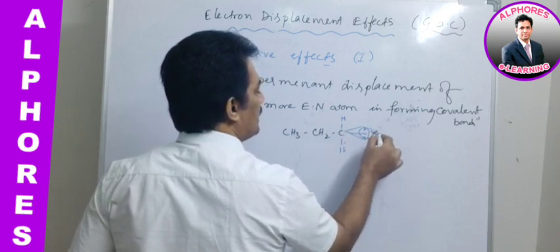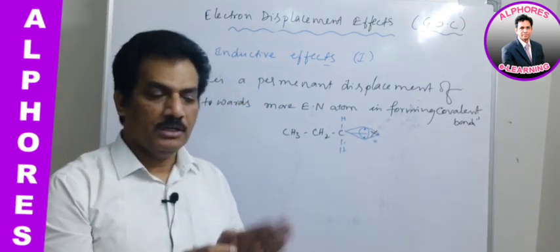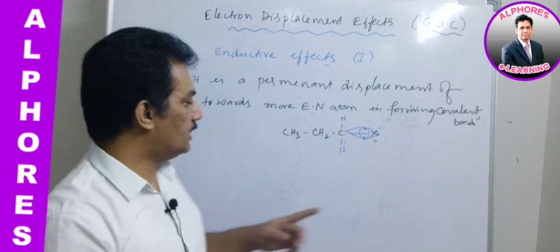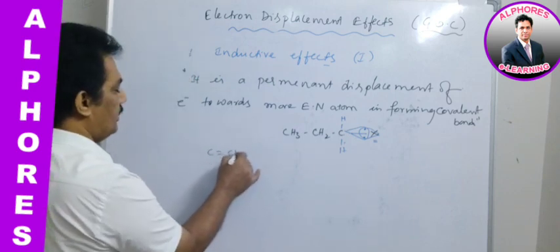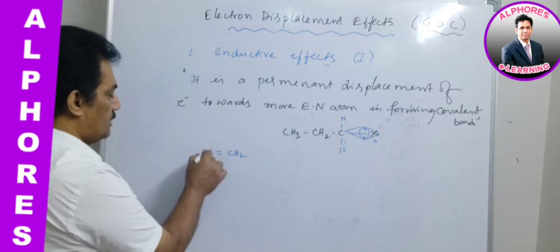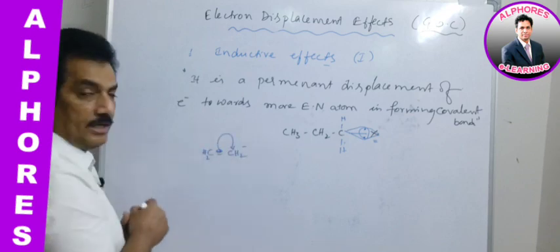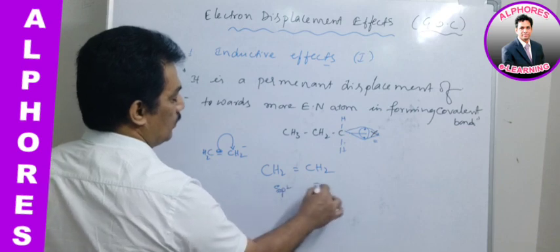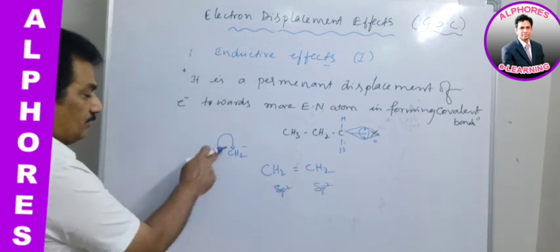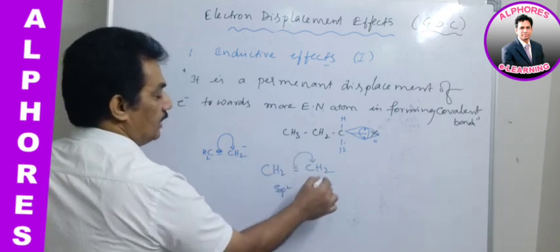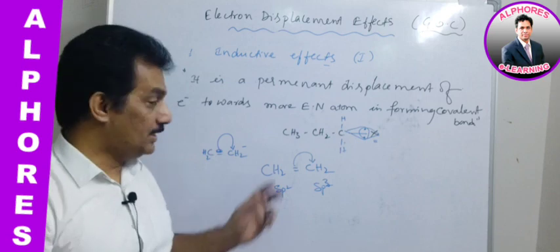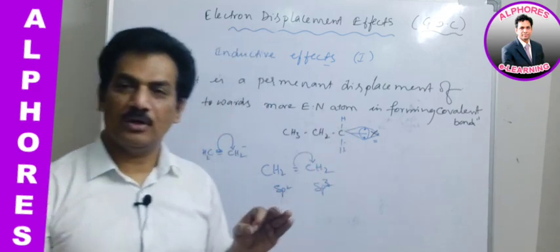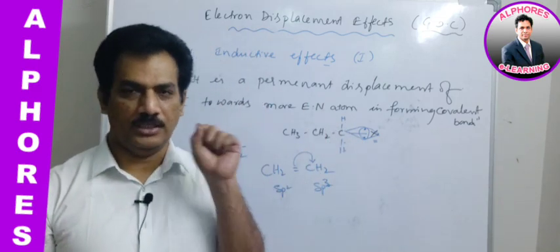Even though displacement is taking place, the electrons remain in the same orbital — they do not get displaced from one orbital to another. Because of this, there is no change in the hybridization of the orbital. For instance, if CH₂=CH₂ electrons completely displaced, the SP2 hybridization would change to SP3 — but such hybridization change is not observed in inductive effect.